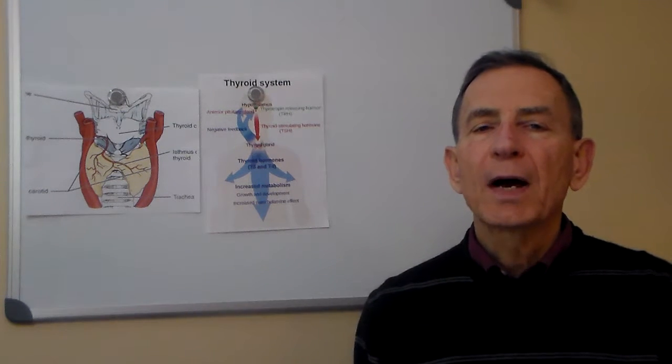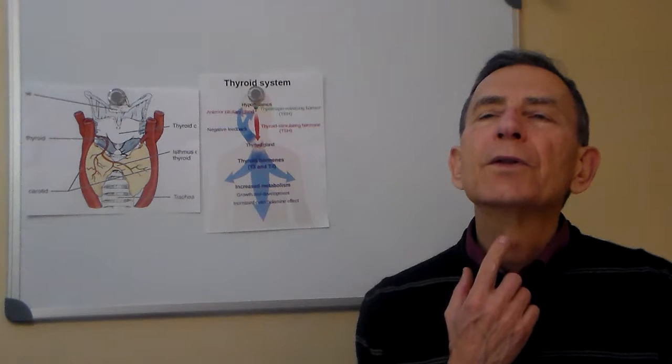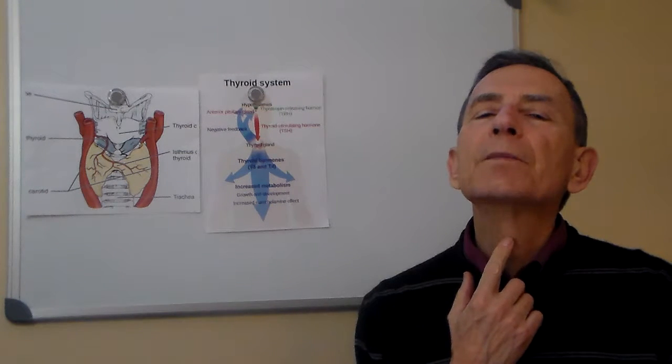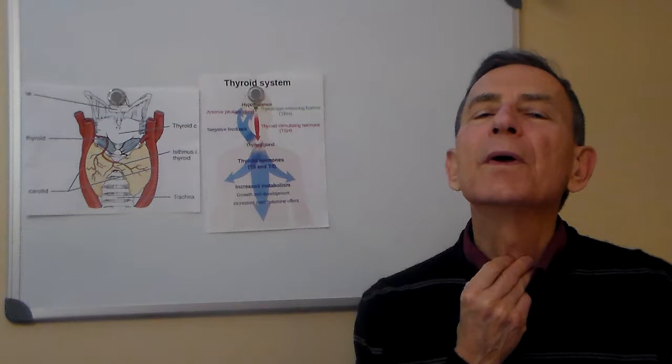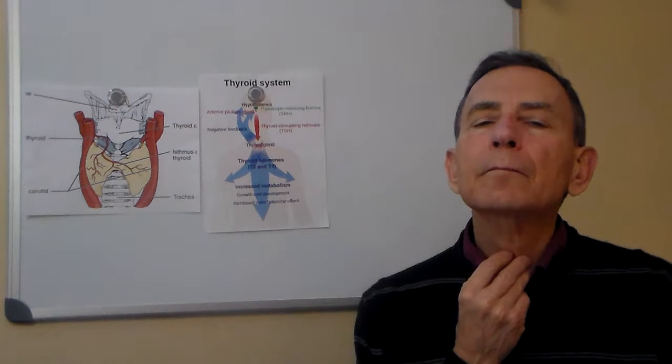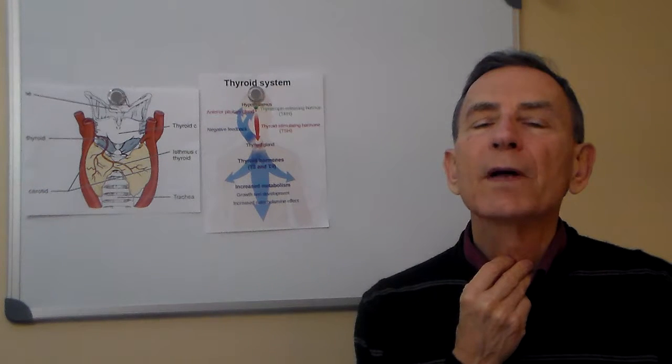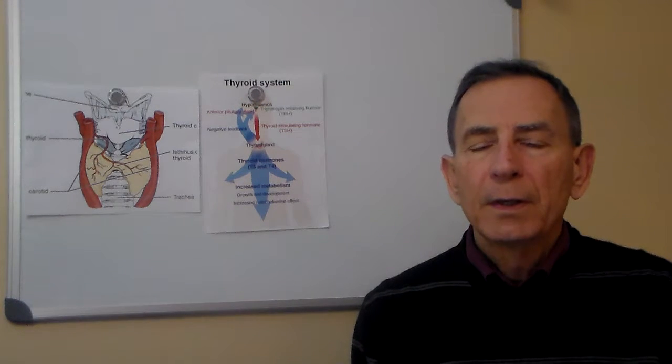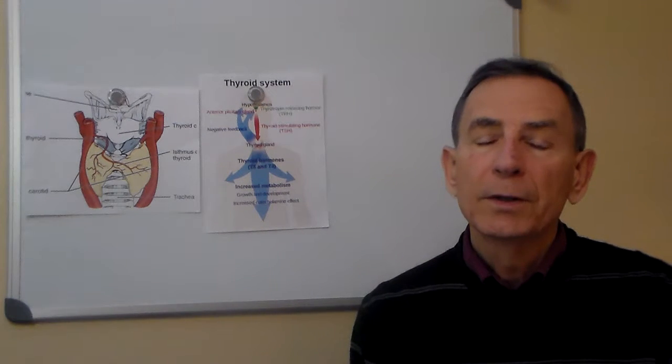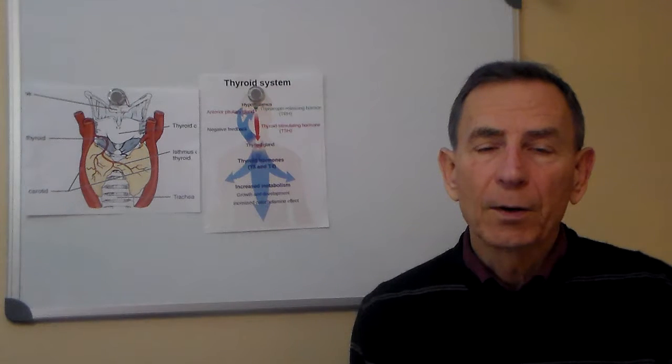So we'll start with the basics. The thyroid is right here in the throat. First you put your finger on your Adam's apple and right under that we have the thyroid. So it's a small butterfly shaped gland, weighs less than an ounce.